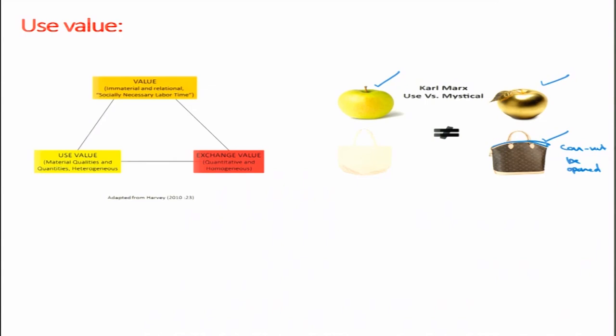Similarly, a bag that cannot be used — if in a showroom there is a dummy with a shirt that is locked completely and you cannot unbutton it, you won't purchase it. So the basic function or basic performance has to be there. Use value and exchange value are related to each other: use values are material qualities and quantities which are heterogeneous, while exchange values involve homogeneous quantities. Immaterial and relational values are also discussed here.